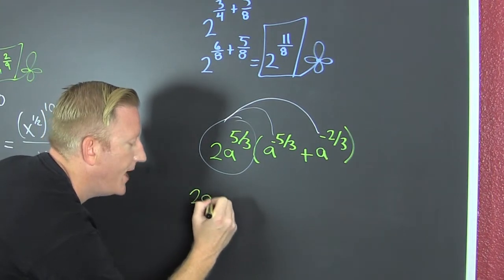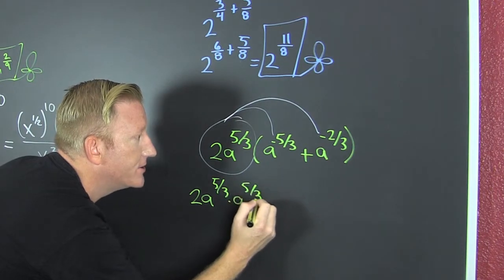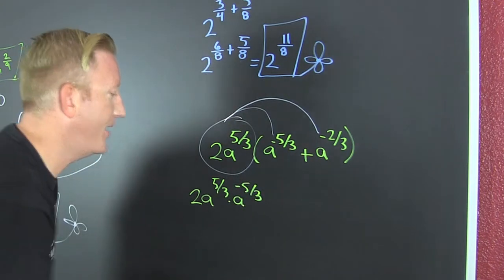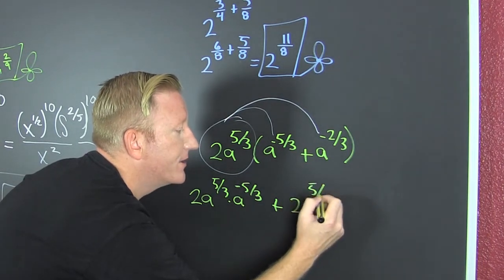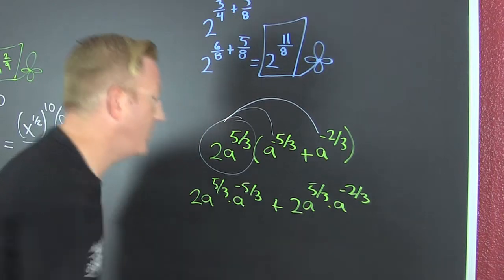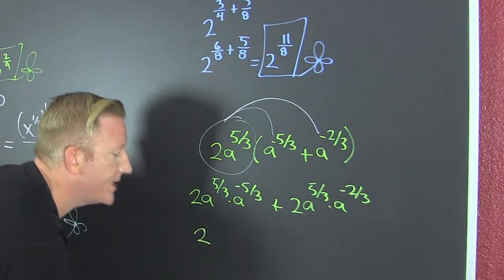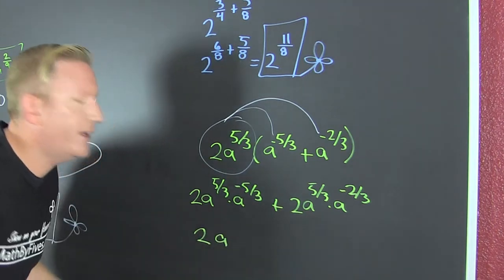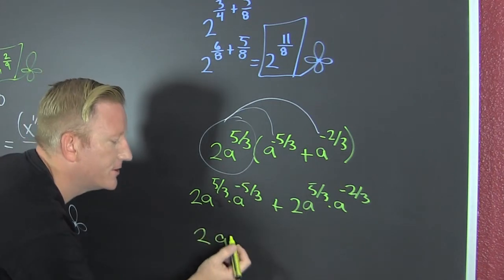So that's 2a to the 5 thirds times a to the 5 thirds negative, plus 2a to the 5 thirds times a to the minus 2 thirds. Oh, we already got common denominators. Oh, boy! So that's 2a to the... what is 5 thirds minus 5 thirds?